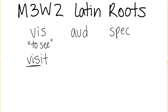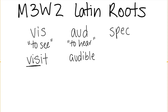Our second Latin root, a-u-d, aud, means to hear. For example, something that is audible — we have our base word a-u-d — this means that you can hear something.